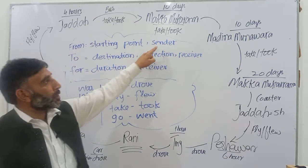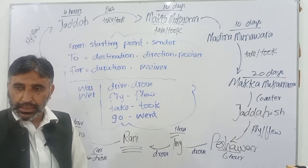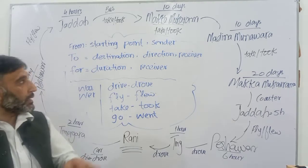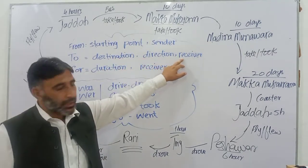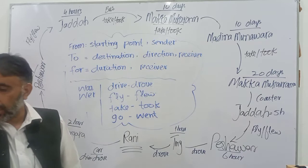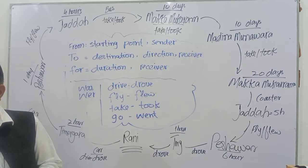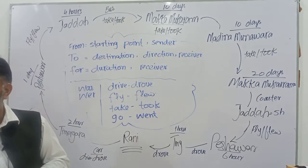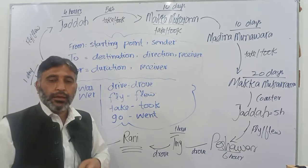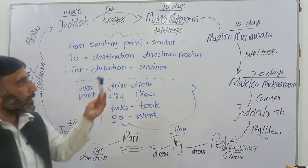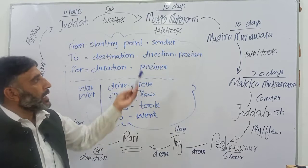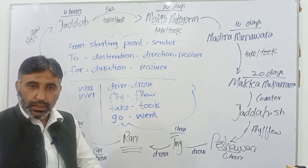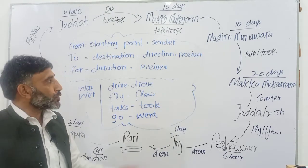We also use 'from' before the sender. For example: this letter is from Bilal; this gift is from Khalid. We use 'to' before the receiver: this letter is from Bilal to Kashyap — Kashyap is the receiver. This gift is from Anwar to his mother. We also use 'to' to talk about direction.